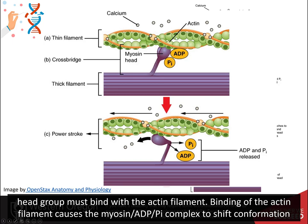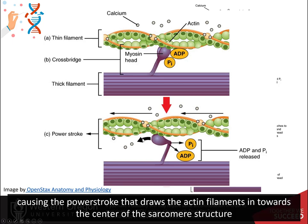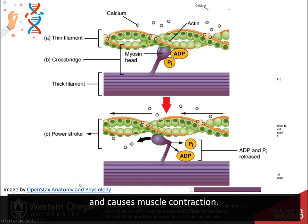Binding of the actin filament causes the myosin-ADP-Pi complex to shift conformation, causing the power stroke that draws the actin filaments in towards the center of the sarcomere structure and causes muscle contraction.